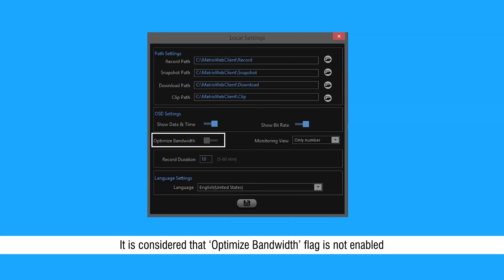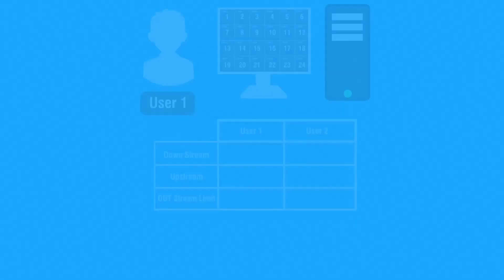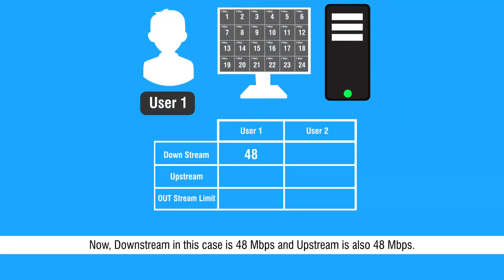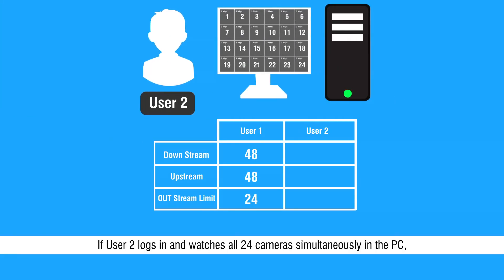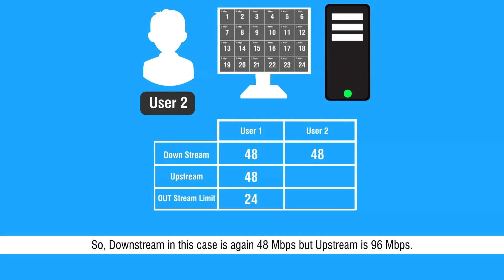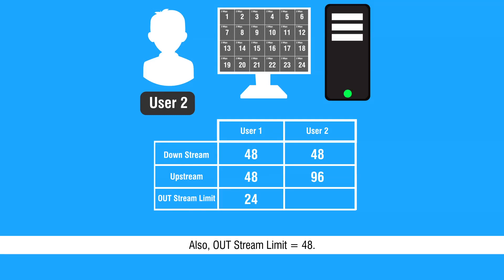It is considered that the optimized bandwidth flag is not enabled at this time, resulting in deliverance of only the mainstream of all cameras irrespective of the layout set. Downstream in this case is 48 Mbps and upstream is also 48 Mbps; out-stream limit is 24. If user 2 logs in and watches all 24 cameras simultaneously on a PC, the device will allocate another 48 Mbps to that user. So downstream remains 48 Mbps but upstream becomes 96 Mbps, and out-stream limit is 48.